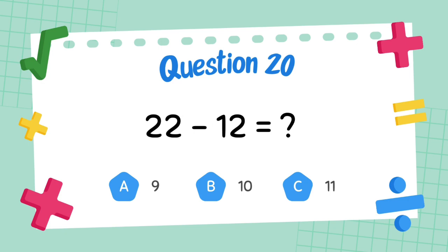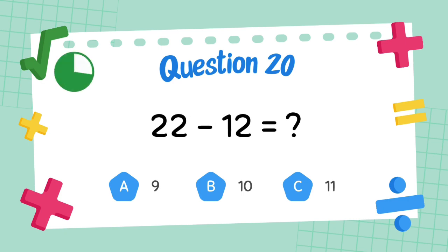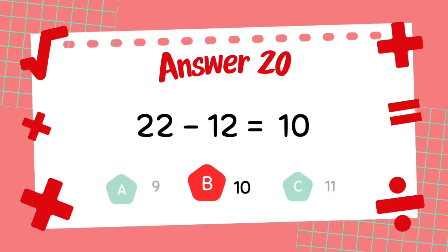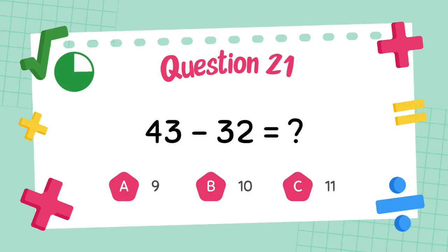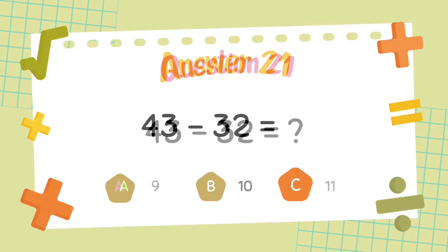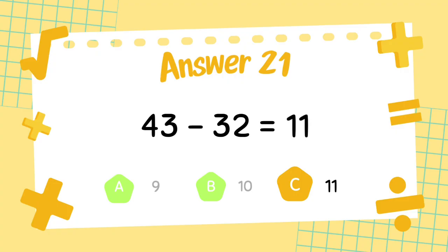What is 22 minus 12? The answer is 10. What is 43 minus 32? The answer is 11.